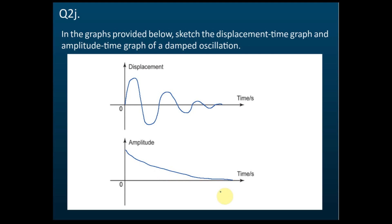For the displacement-time graph, you need to show the displacement, which can be positive or negative, with the amplitude becoming less and less over time. When sketching, make sure the period is more or less the same because the frequency remains the same. For the amplitude-time graph, there are no negative values — just show that the amplitude decreases as a curve over time and finally becomes zero.